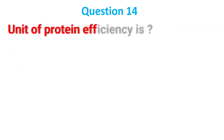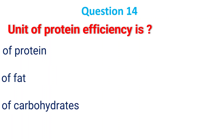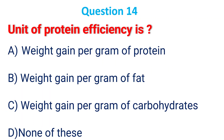The unit of protein efficiency is: A. Weight gain per gram of protein; B. Weight gain per gram of fat; C. Weight gain per gram of carbohydrate; D. None of these. The answer is A, weight gain per gram of protein.